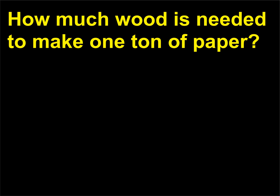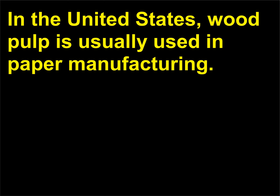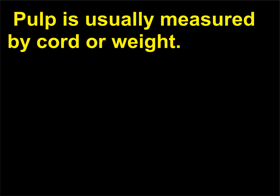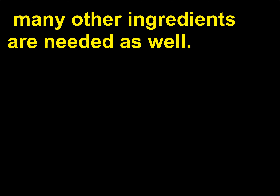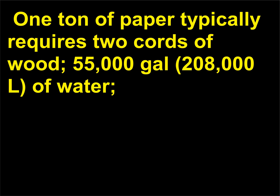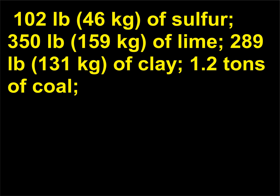How much wood is needed to make one ton of paper? In the United States, wood pulp is usually used in paper manufacturing. Pulp is usually measured by cord or weight. Although the fiber used in making paper is derived overwhelmingly from wood, many other ingredients are needed as well. One ton of paper typically requires two cords of wood, 55,000 gallons (208,000 liters) of water, 102 lb (46 kg) of sulfur, 350 lb (159 kg) of lime, 289 lb (131 kg) of clay, and 1.2 tons of coal.